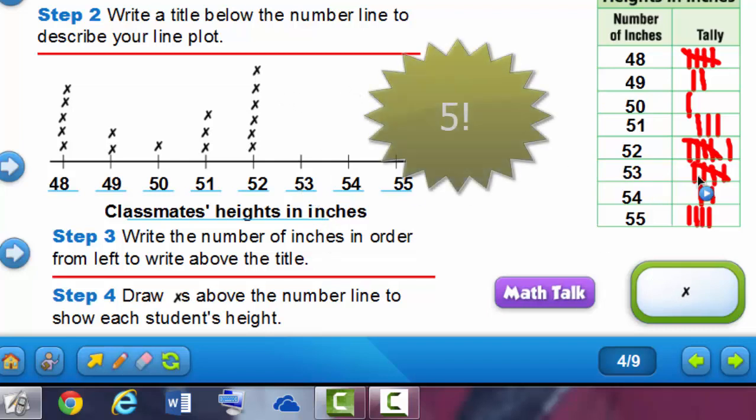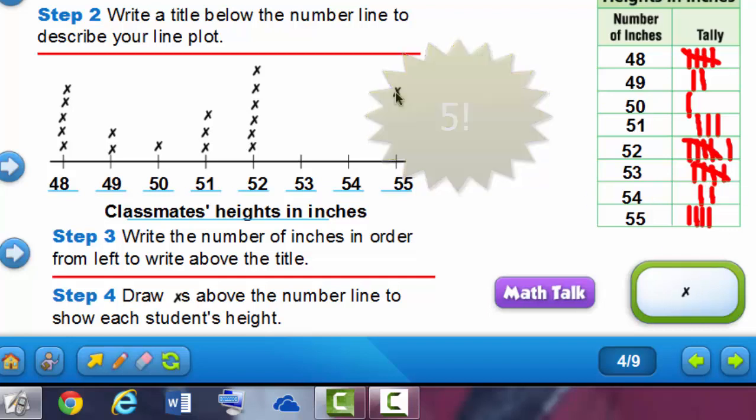How many were 53? That's right, 5. So we need 5 X's above the 53 to show 5 students were 53 inches tall. Two students were 54 inches tall, so we need 2 X's above the 54.